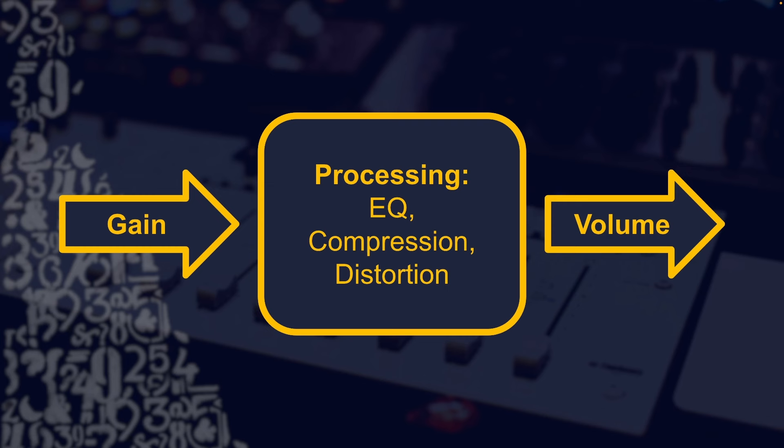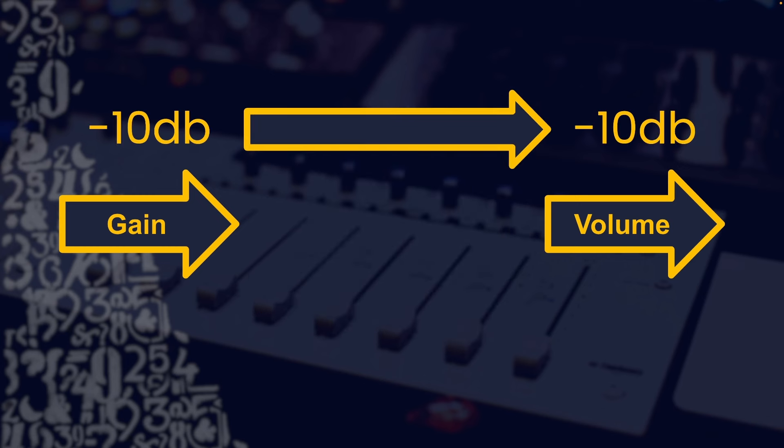For example, I can say I have gain of minus 10 decibels going into my EQ, and then I have 10 decibels of volume coming out. After my EQ that's volume, but then compression is next. I can say I have 10 decibels of gain going into my compression. So that same point in the process could be described as volume or gain depending on the context surrounding it. The goal of gain staging is that the gain going into a process is the same as the volume coming out.